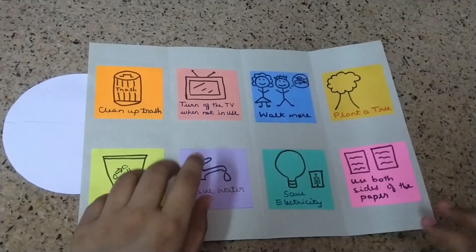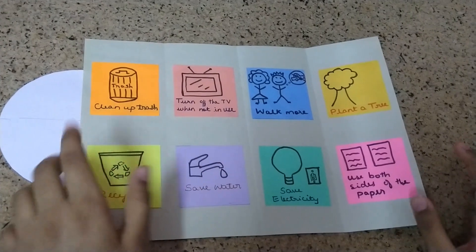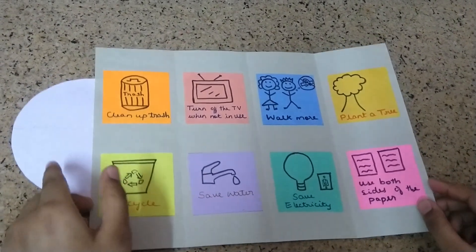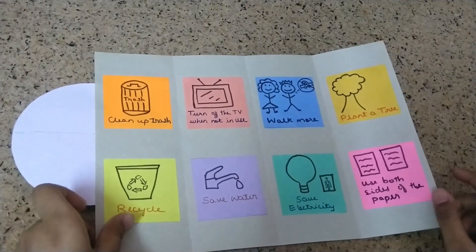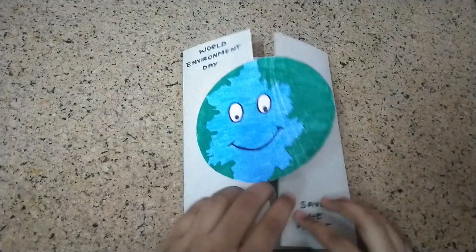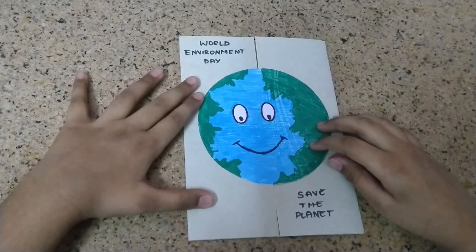If everyone takes care of the environment by doing such little things every day, it will make a big difference. If we take care of the Earth, it will take care of us. The theme of World Environment Day 2020 is biodiversity. You can read more details about biodiversity here.